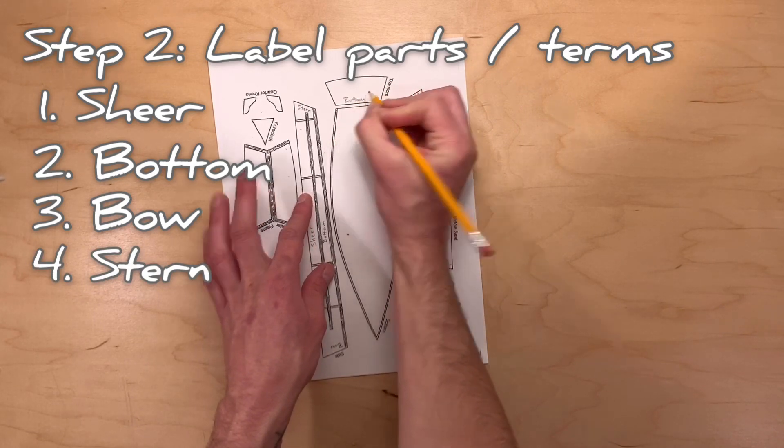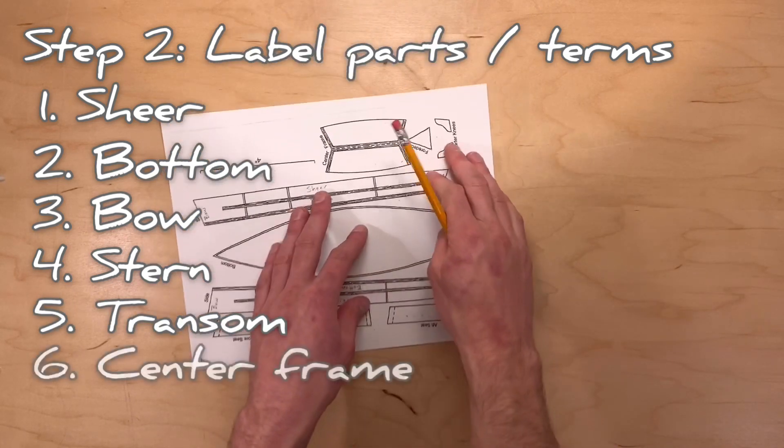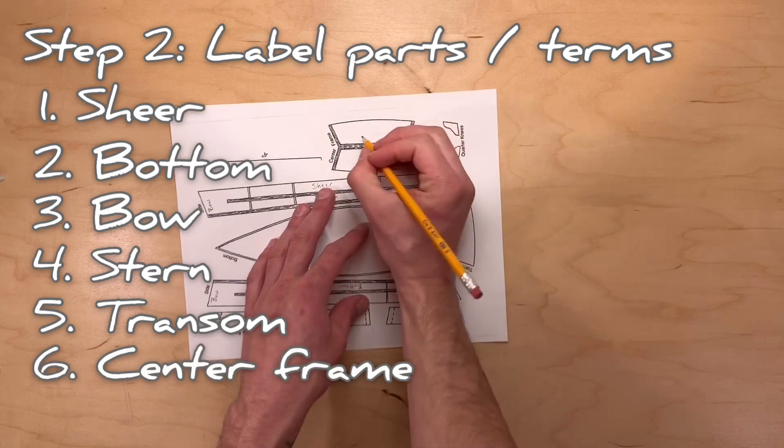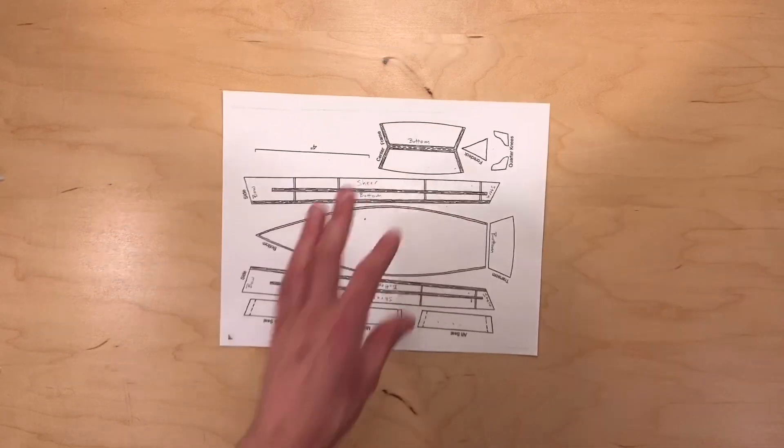I've also labeled the bottom of the transom or the piece that forms the back of the boat so we remember which way it goes. Finally, I'm going to label the bottom of the center frame which we'll fold in half later and will give our boat its shape and stability.